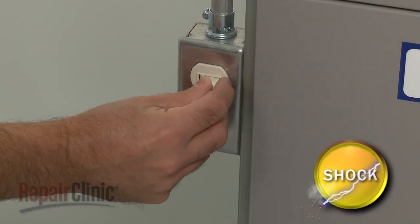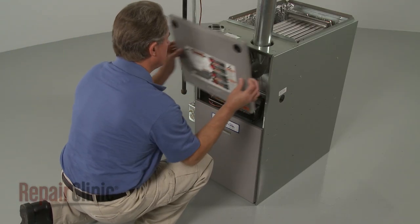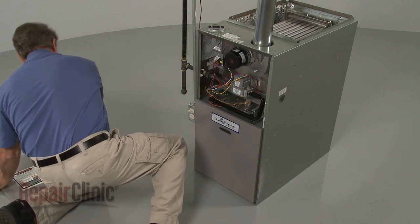First turn off the power to the furnace. Now slide the upper access panel up to detach, followed by the lower panel.